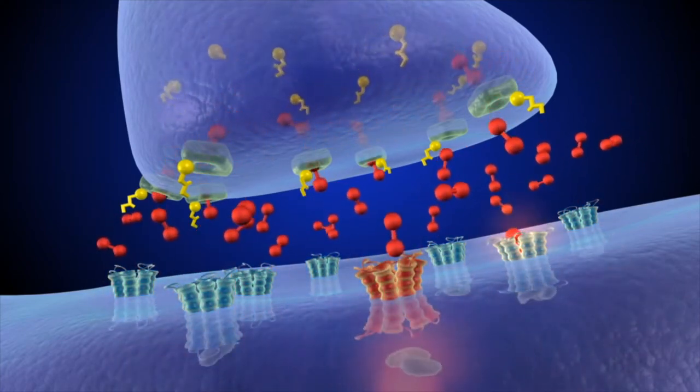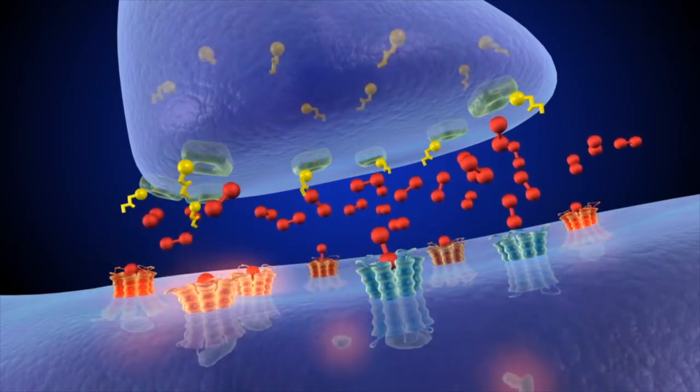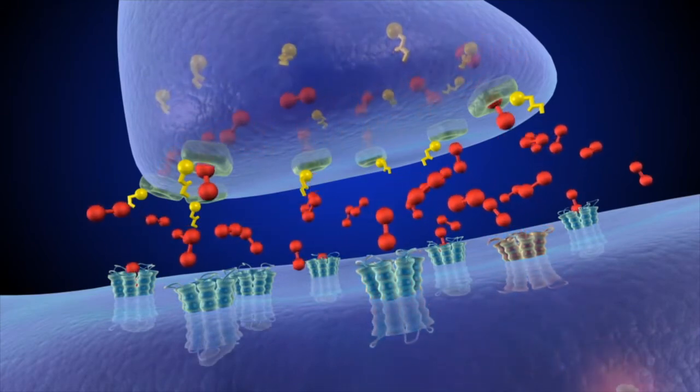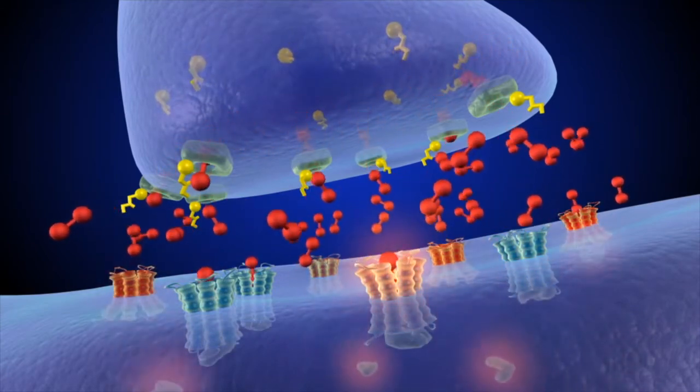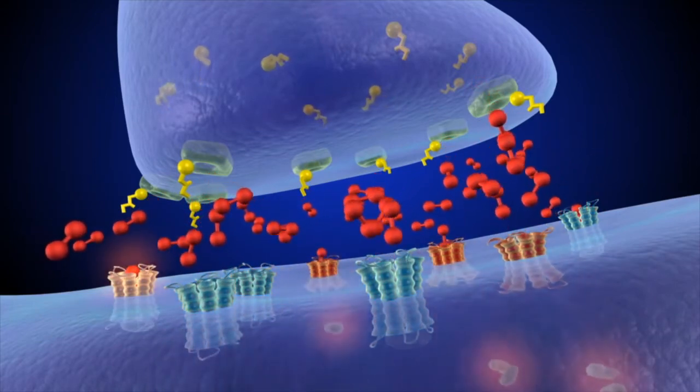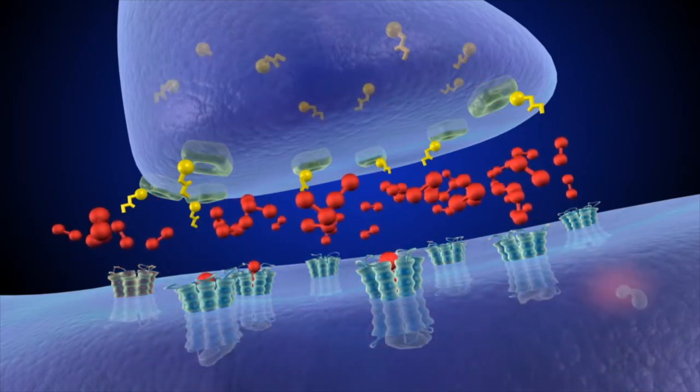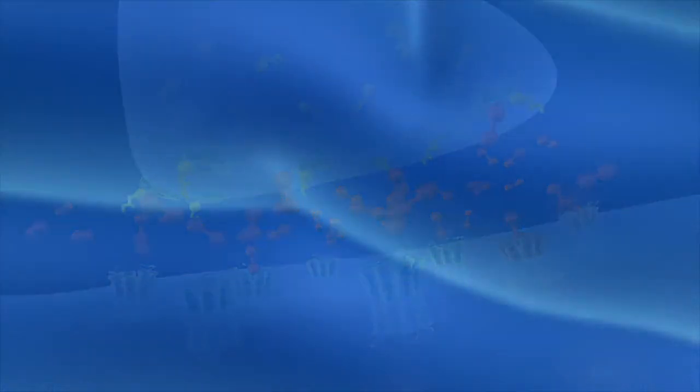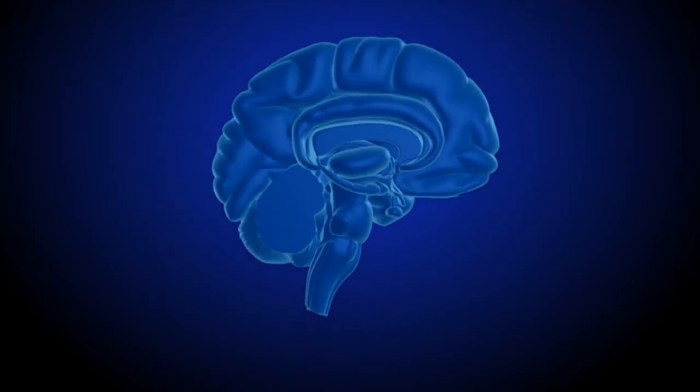Because so much dopamine remains in the synapse for such long periods of time, the post-synaptic cell is activated to dangerously high levels, causing the user to experience powerful feelings of euphoria, making meth incredibly addictive. Using cocaine or meth has far-reaching consequences on the brain.